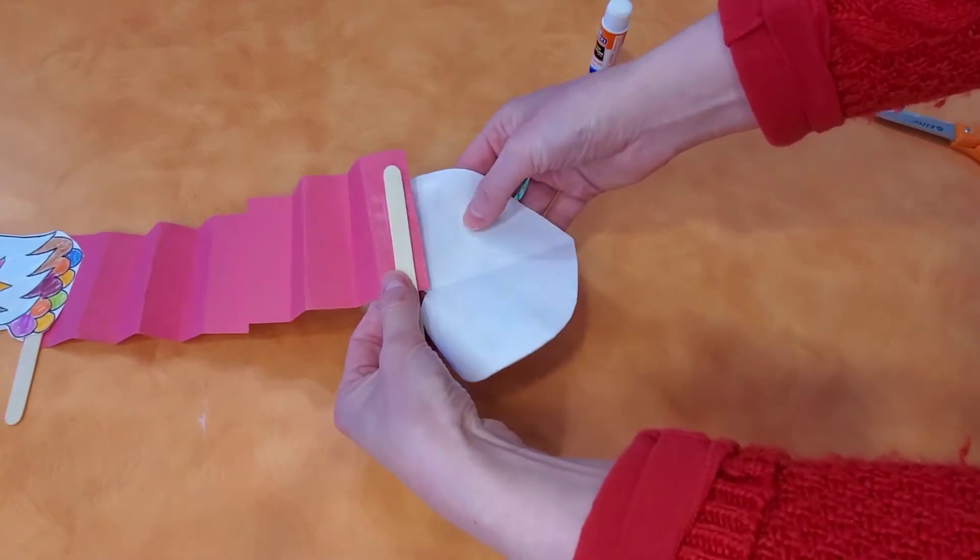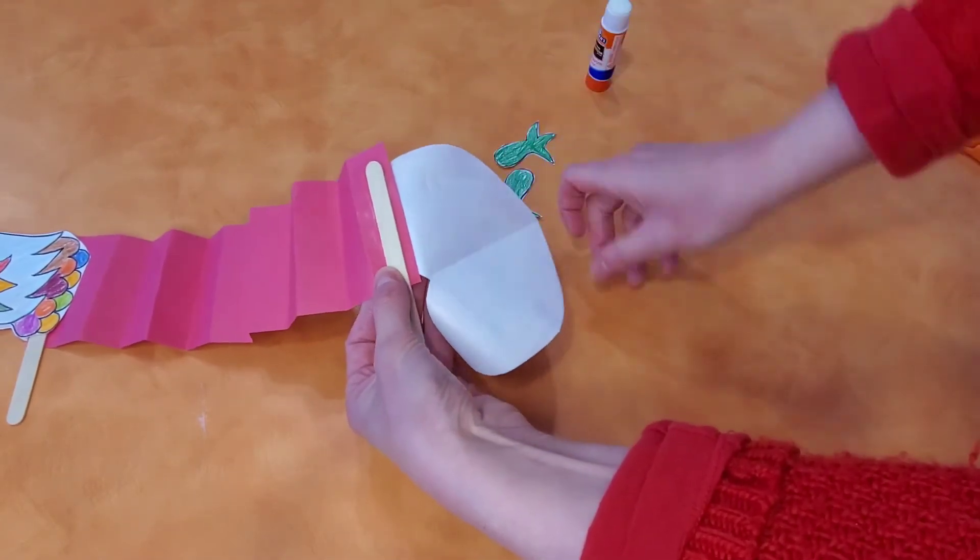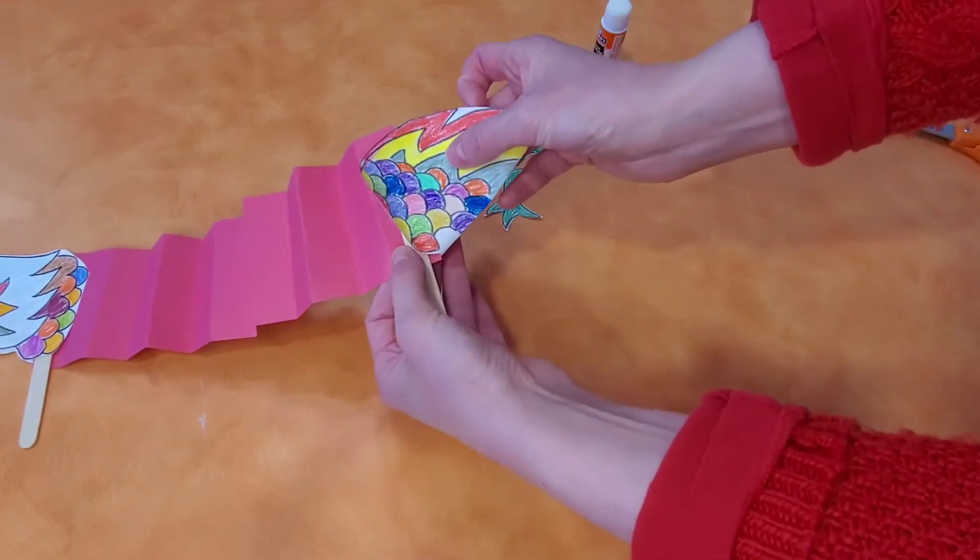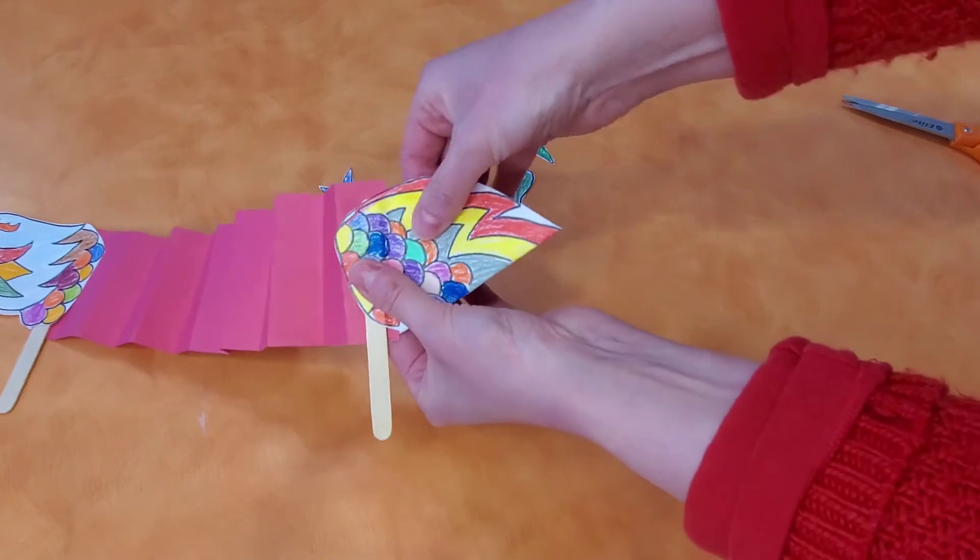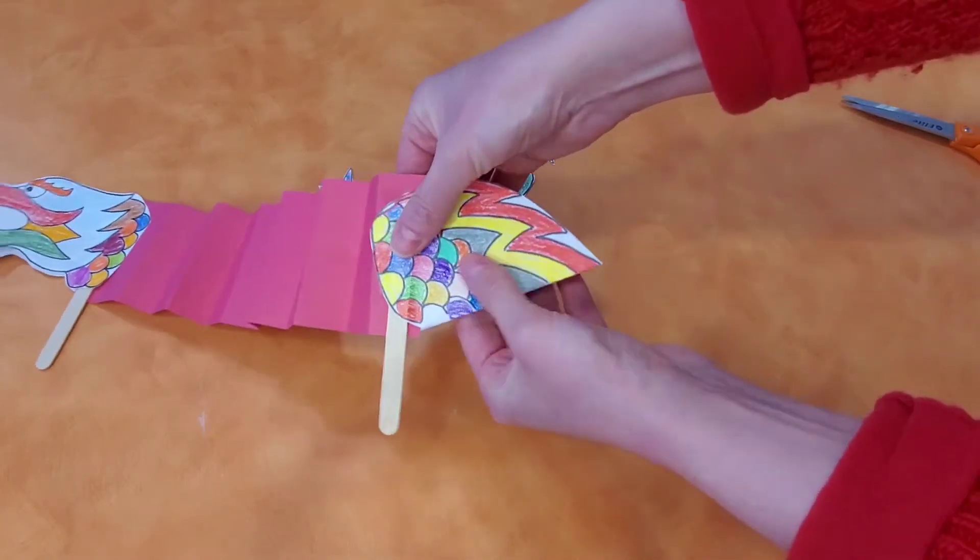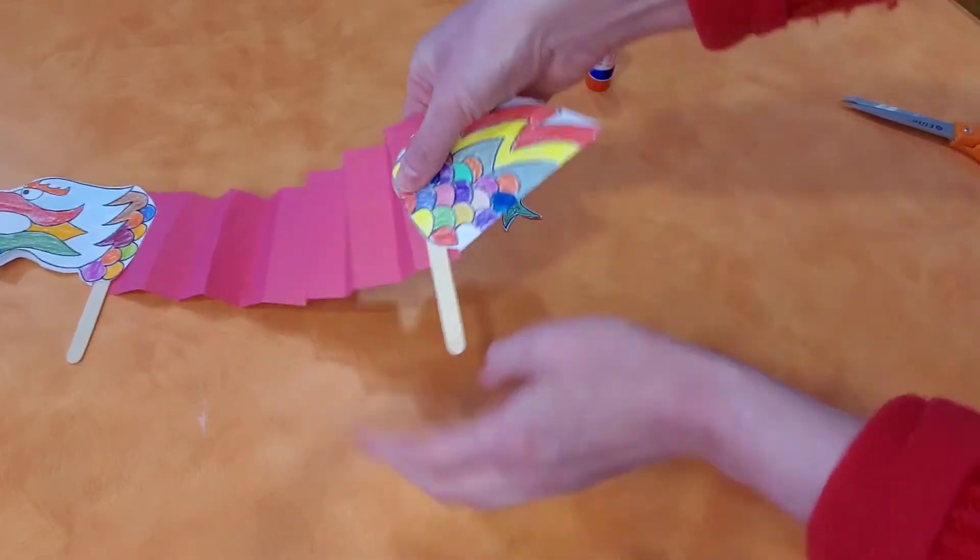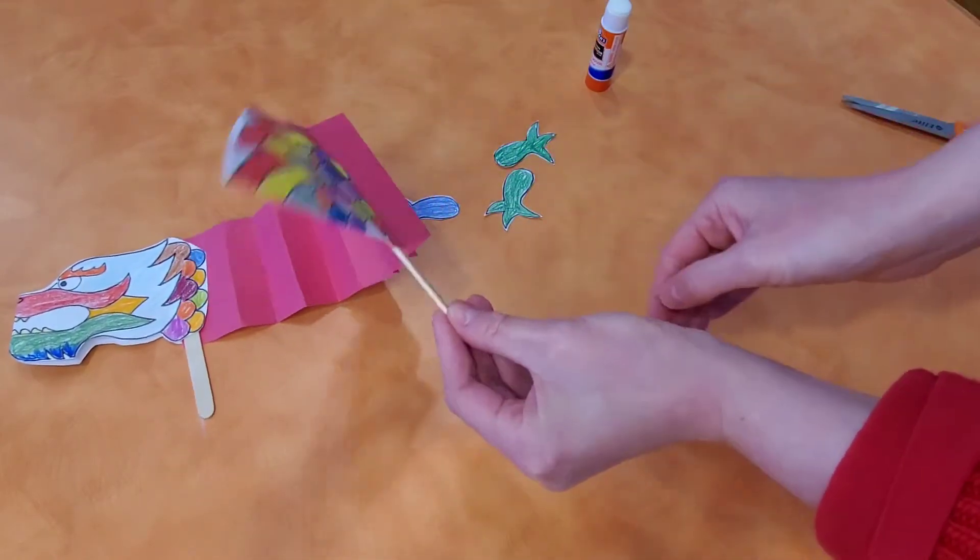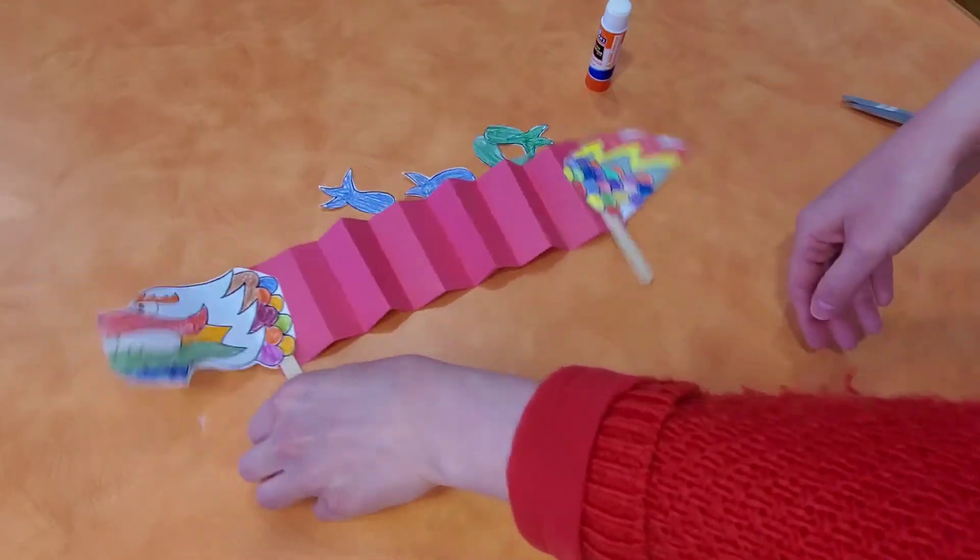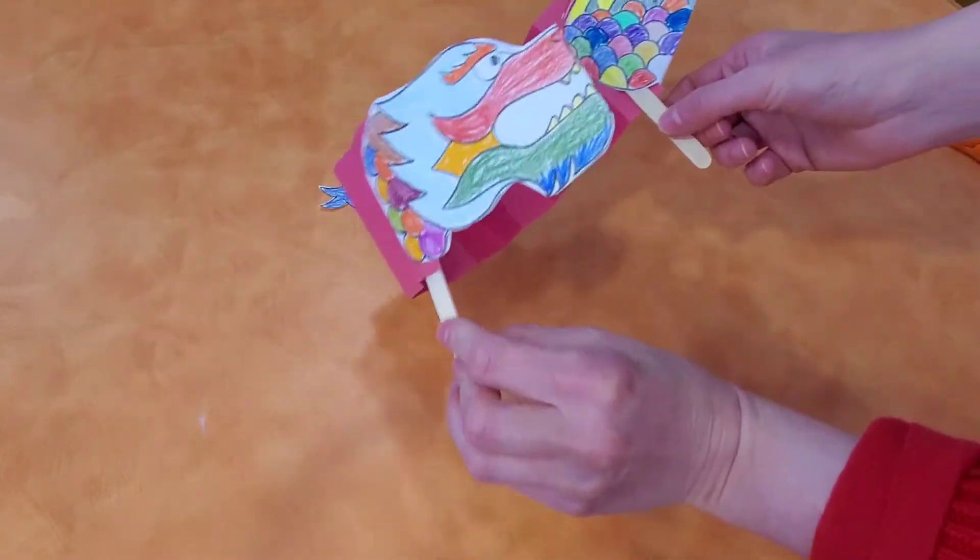And you put one on one side and one on this side. And we squeeze. You can also squeeze the other glue down. There we go. So now it's on both sides. And then the head is also on both sides.